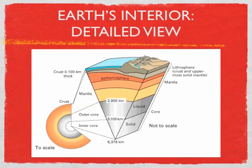Here's a more detailed view of the Earth's interior. Still, we have the crust, which is the thinnest layer. Then we added the lithosphere. The lithosphere includes both the crust and the upper portion of the mantle. The next layer is the asthenosphere — it's part of the mantle, but it has its own special name because it has different properties from the rest of the mantle.